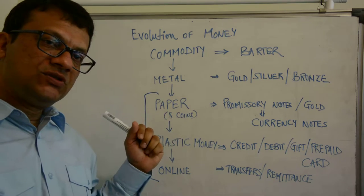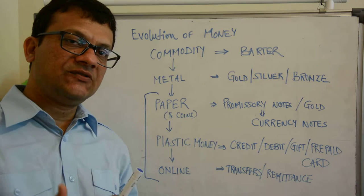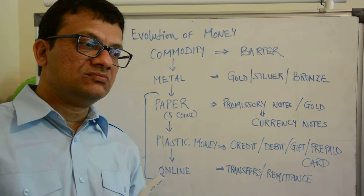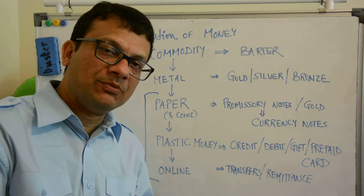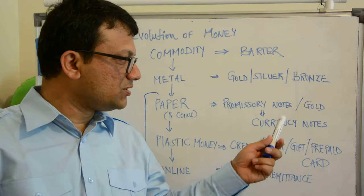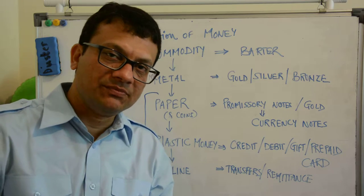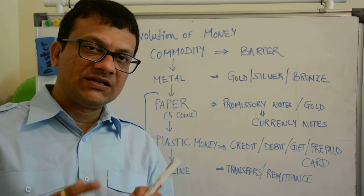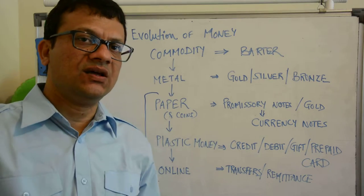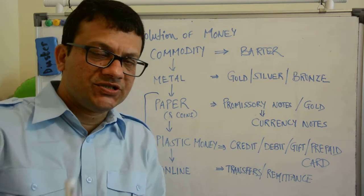From there we evolved to paper. Paper was introduced because it was physically very tedious or risky to carry gold or silver as currency to buy goods or make payments. So paper currency was in the form of a promissory note — a note which stated that X amount of gold is being backed against this paper, so the acceptor of this paper understands its value. These were issued during kingdom times, by kings or their treasury departments and ministries.